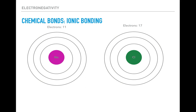As we begin to number our electrons for sodium, we know that we can place two electrons on the first shell. The second shell, as we discussed, can hold up to eight electrons. Since we have only 11 electrons, there is only one electron remaining that needs to be placed in order to appropriately depict the number of electrons for sodium.